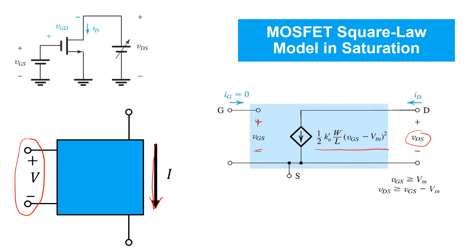Remember that in triode, the current that's flowing also depends on the drain-source voltage.